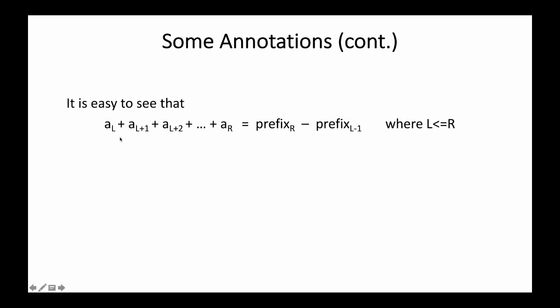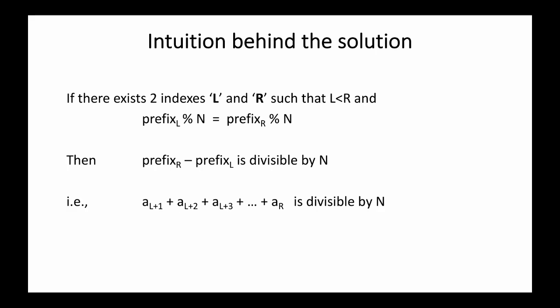It is easy to see that the sum of elements from index l to r — that is a_l plus a_{l+1} until a_r — can be obtained by prefix_r minus prefix_{l-1}, where l is less than or equal to r. Now, if there exist two indexes l and r such that l is less than r and prefix_l mod n equals prefix_r mod n, then prefix_r minus prefix_l is going to be divisible by n. This gives us the subset from index l+1 to r.